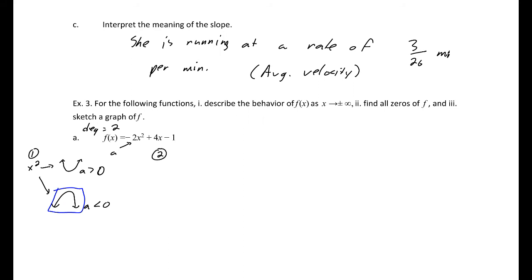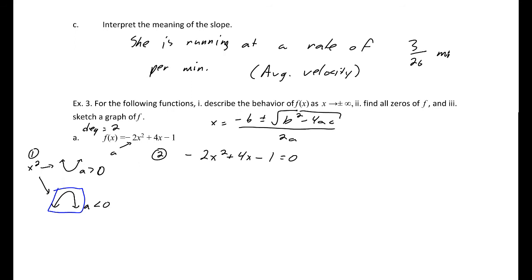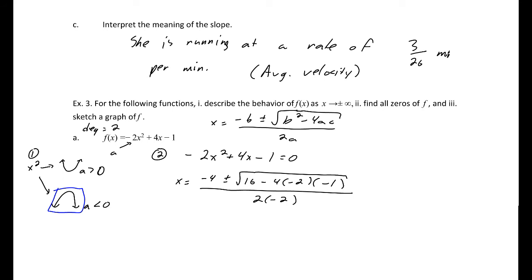For the zeros, we set the equation equal to zero and solve using the quadratic formula: x equals negative b plus or minus the square root of (b squared minus 4ac), all divided by 2a. In this case, x equals negative 4 plus or minus the square root of (16 minus 4·(-2)·c), all divided by 2·(-2), which simplifies to negative 4 plus or minus something over negative 4.